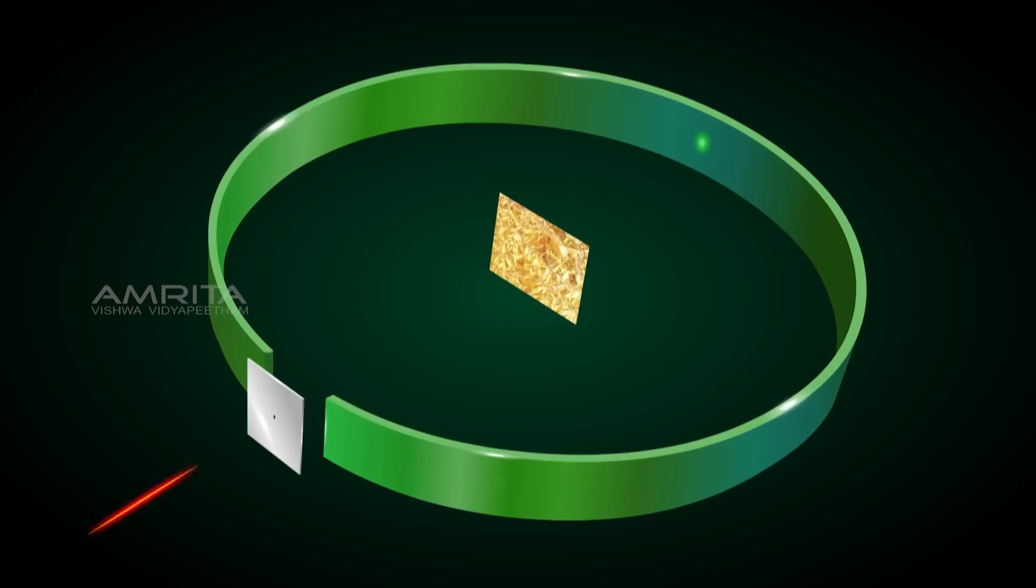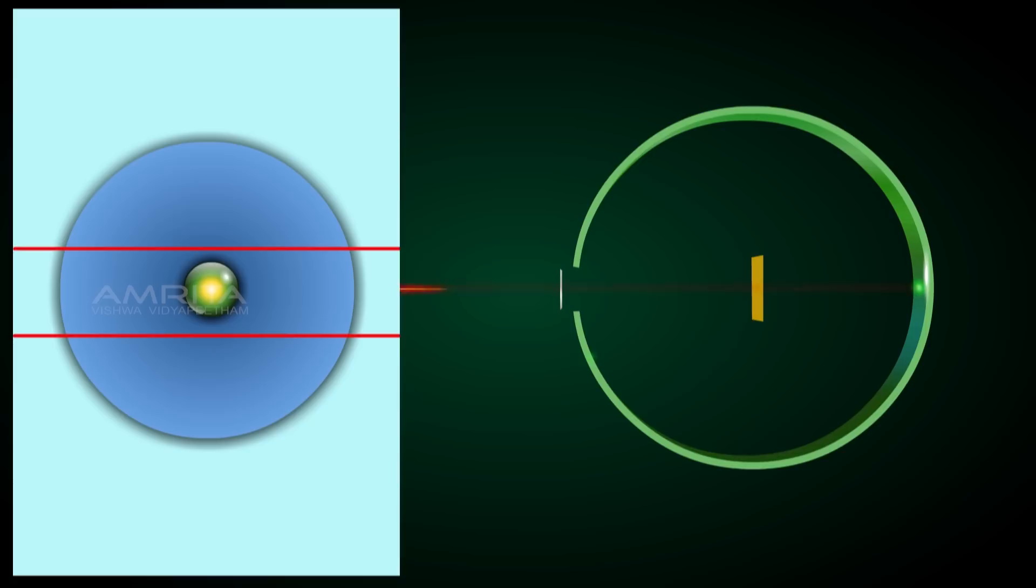As such, Rutherford observed that most of the alpha particles passed straight through the foil, which implied that most of the space inside the atom is empty.